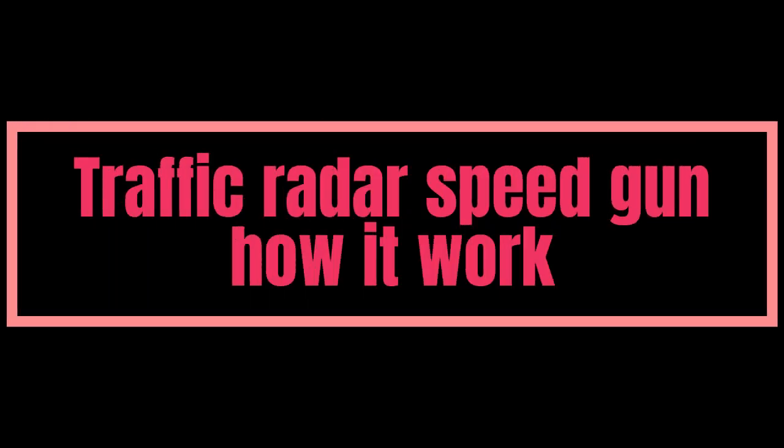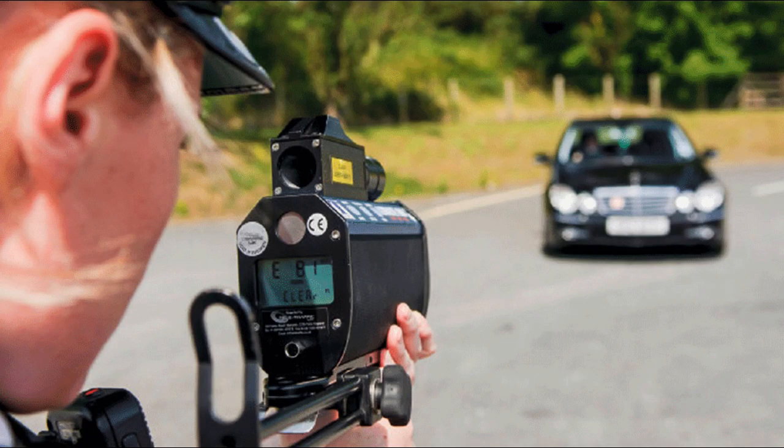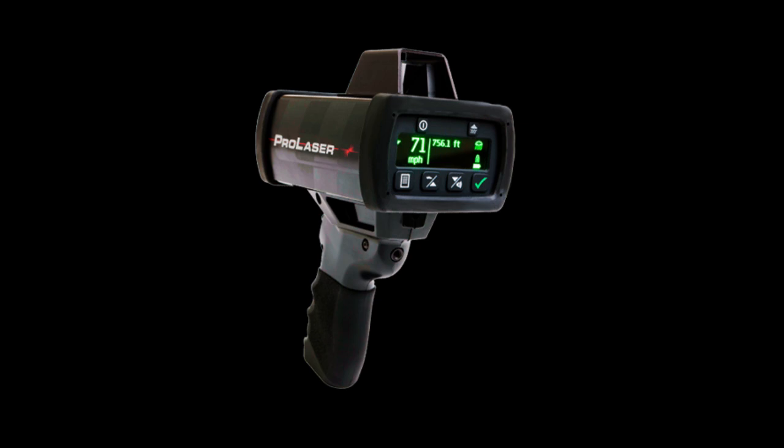Hello everyone, welcome to my channel. Today we are going to look at the traffic radar speed gun and how it works. Traffic police officers use speed meters or speed measurement devices to enforce speed limits and monitor the speed of vehicles on the road. One commonly used speed measurement device is a radar gun.